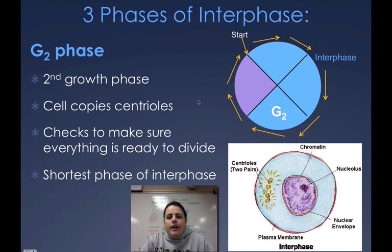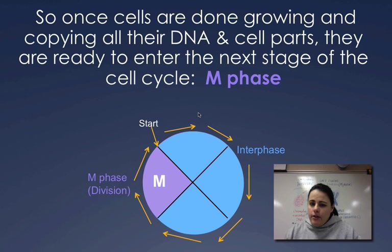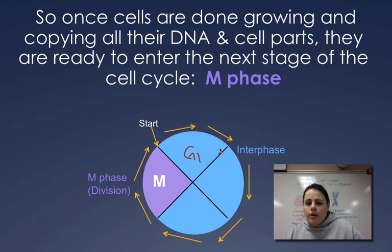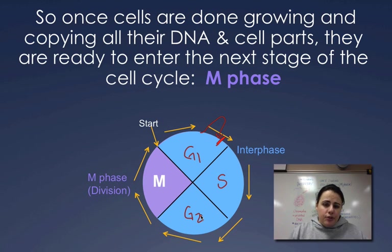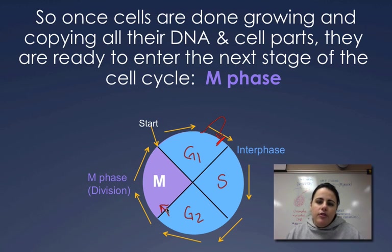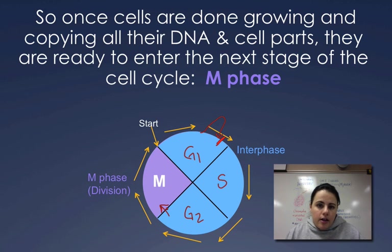So those are the three parts of interphase: G1 — growth and normal work; you can leave and go into G0, but once you pass the checkpoint you're committed to divide; S phase — copy your DNA; and G2 — check to make sure everything's good, you've copied your centrioles and other organelles, and nothing will inhibit division. Then you go into M phase, which is how cells actually do the division part — that's for the next video. Hopefully that was helpful — come with questions and hopefully you paused periodically and filled out your notes.